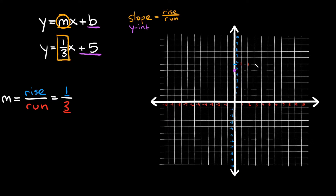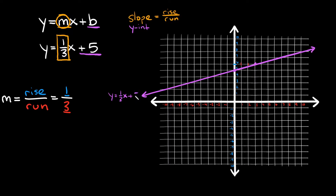We go up one and then over three — one, two, three. So we just found another point that runs through our graph. To graph a straight line, all you need is two points, so draw a straight line between those two points. This line represents the equation y is equal to one-third x plus five.